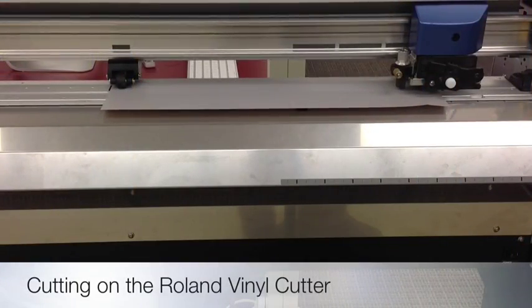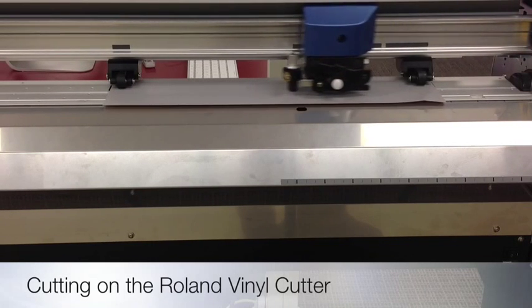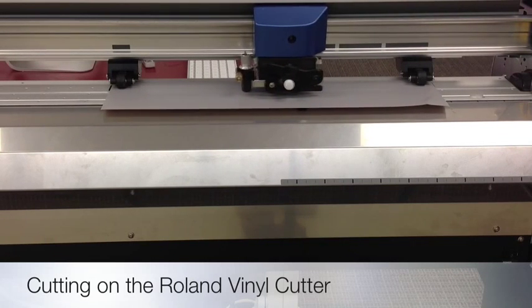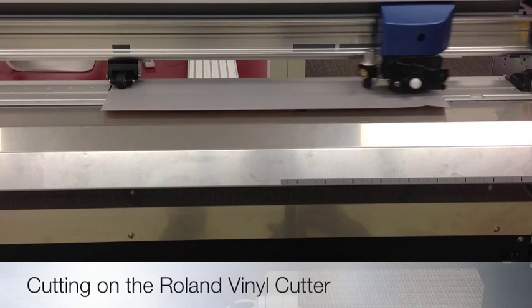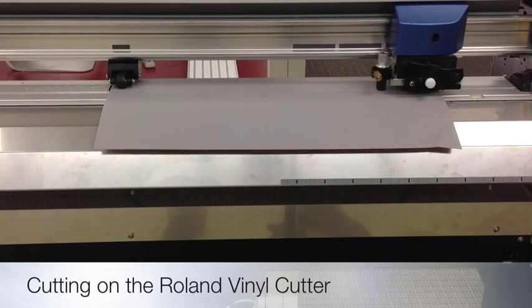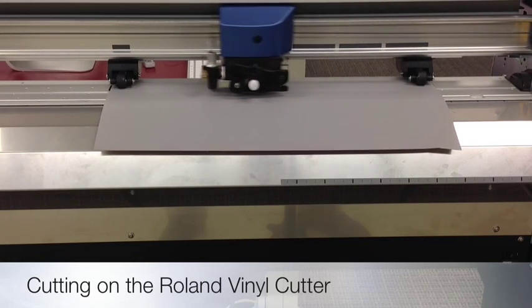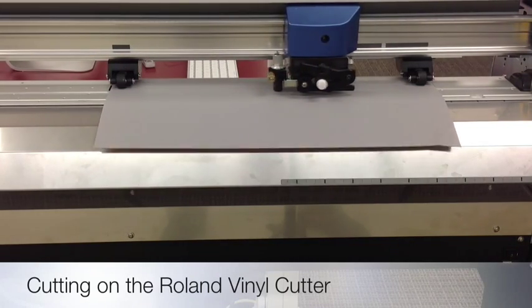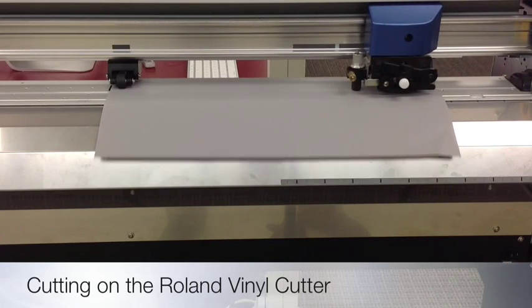Once you hit the Cutting button on the software, then the vinyl cutter should start cutting out your design. As you can see, the knife will move back and forth as the vinyl moves in and out of the machine to create the design. Complex designs can take a while to cut, so please be patient.